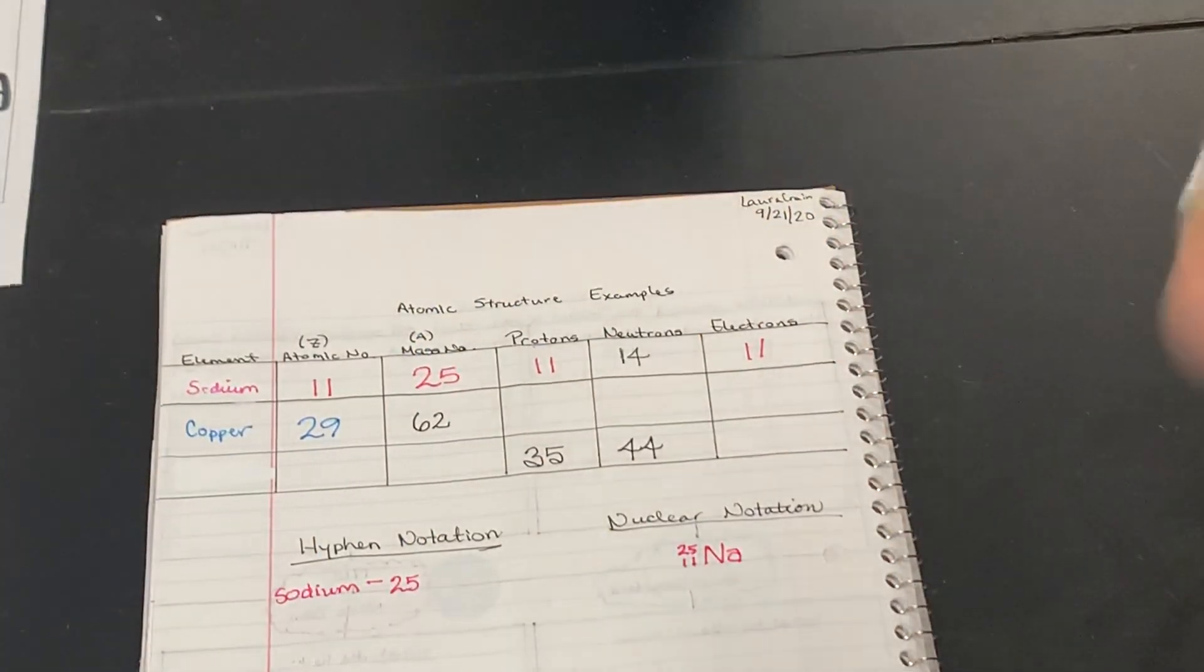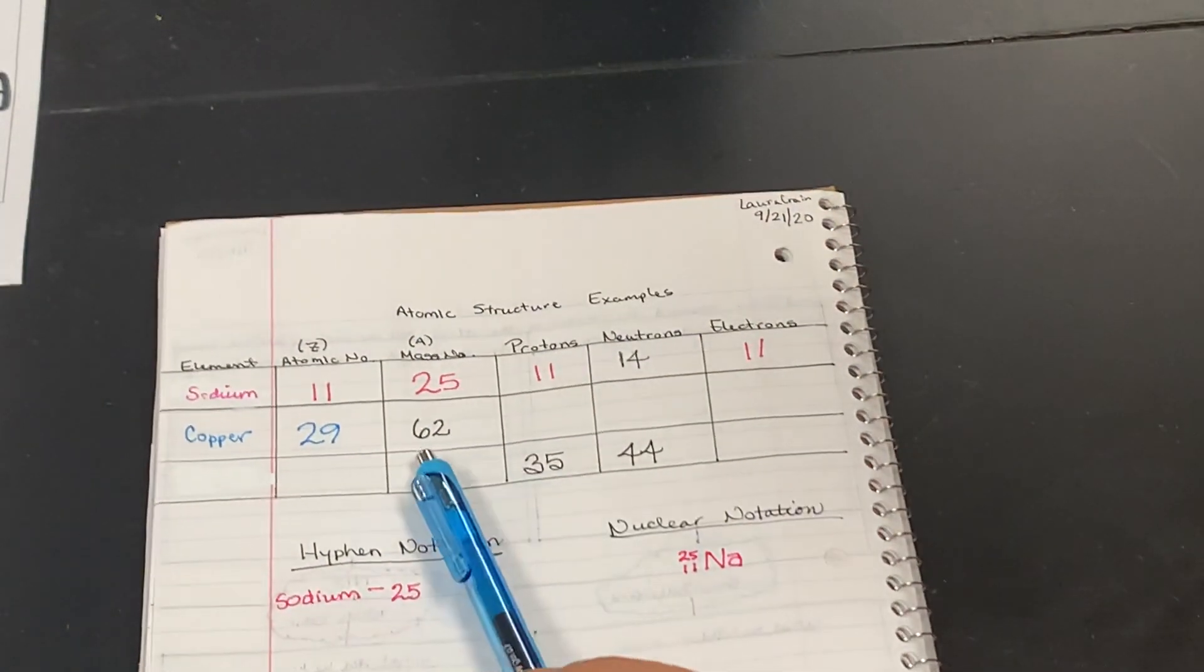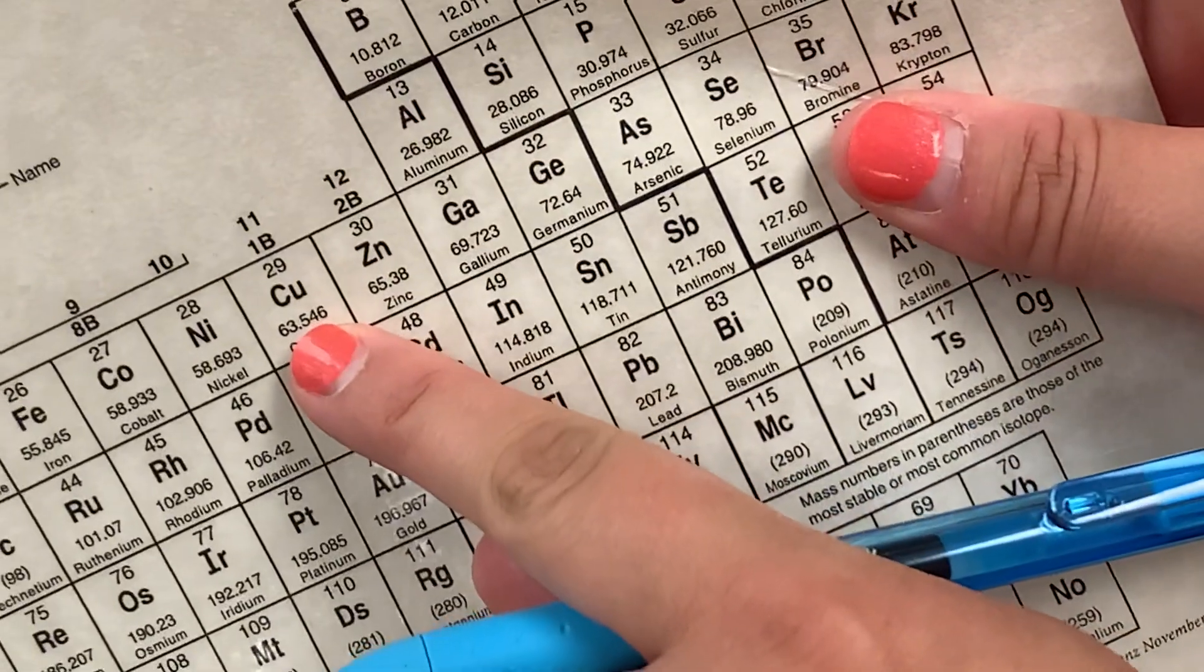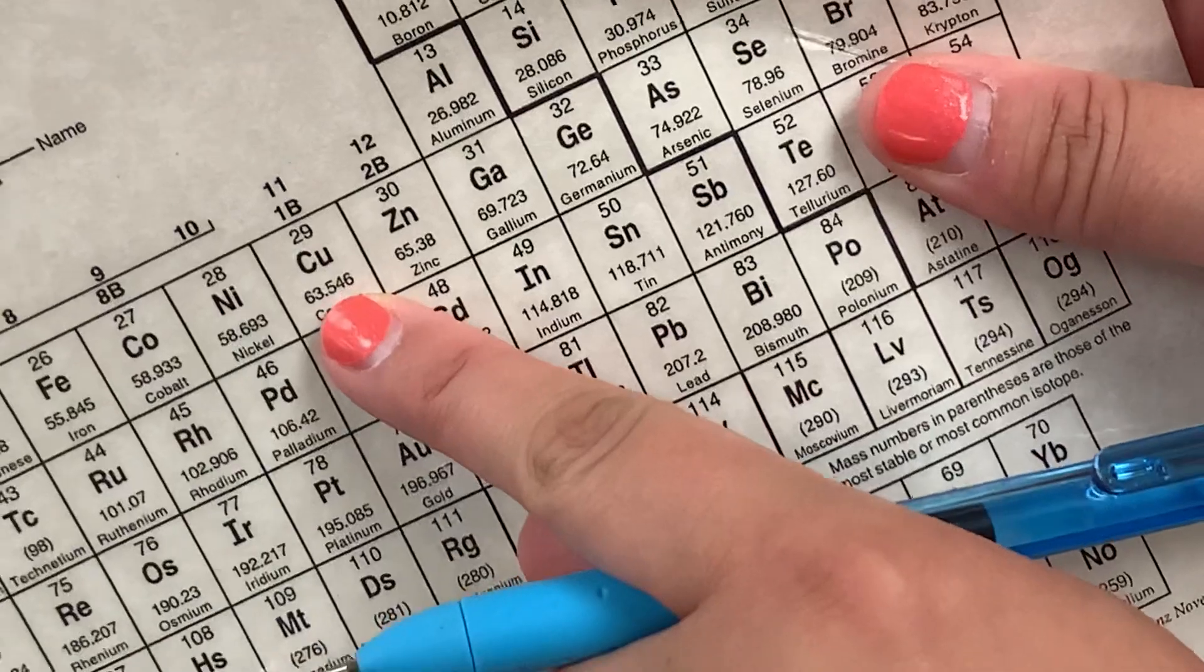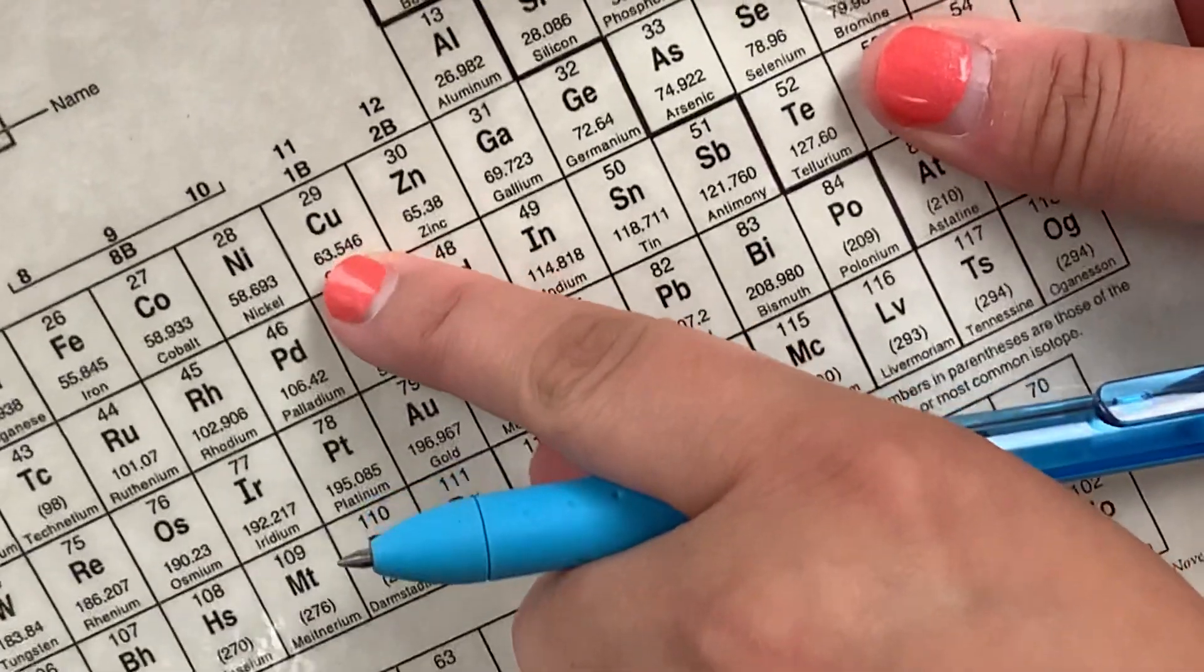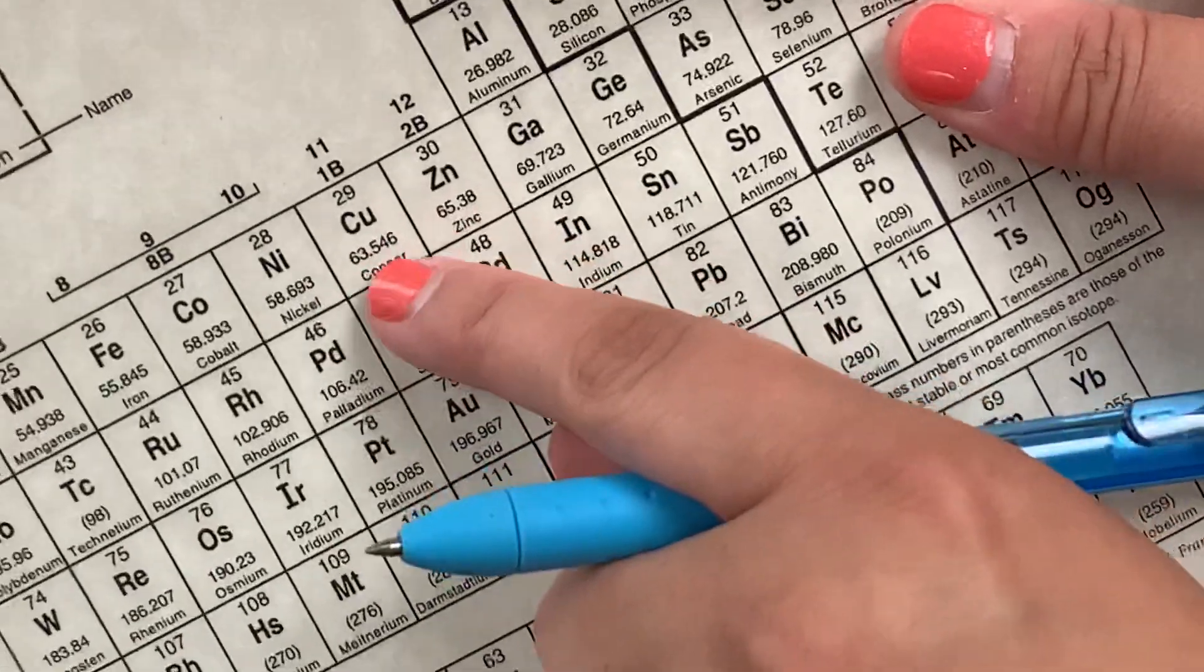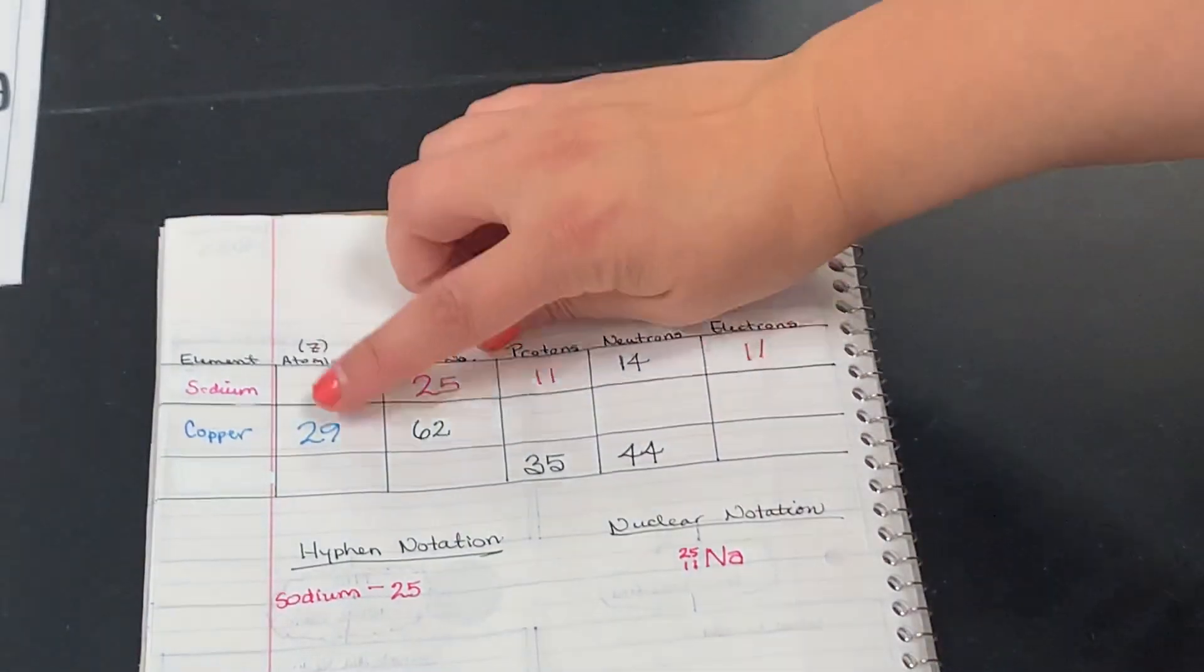Now I want you to notice something. Our mass number that they gave us is 62. Is that anything like the number on your periodic table? It's close, but we're pretty far from 63.546. So remember, the mass number is not this number here. No, no, no.